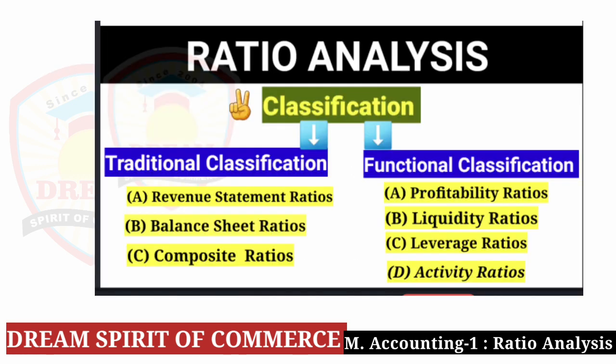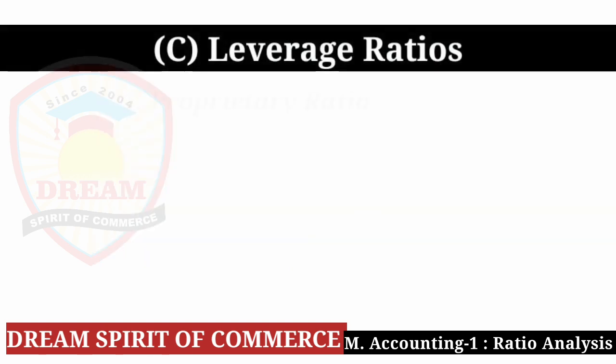Friends, in functional classification there are 4 types. Type A: Profitability Ratio — it has 2 parts: A) based on sales, B) based on investment. After that, Type B: Liquidity Ratio. Now we are going to see Type C: Leverage Ratio.